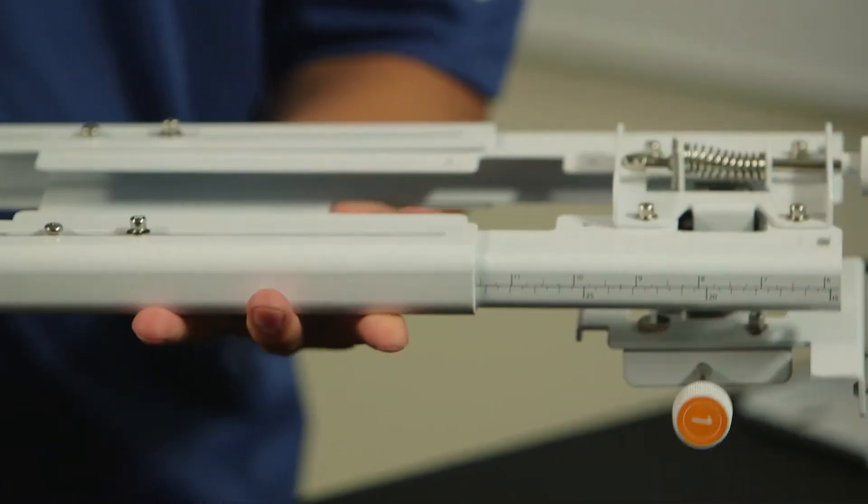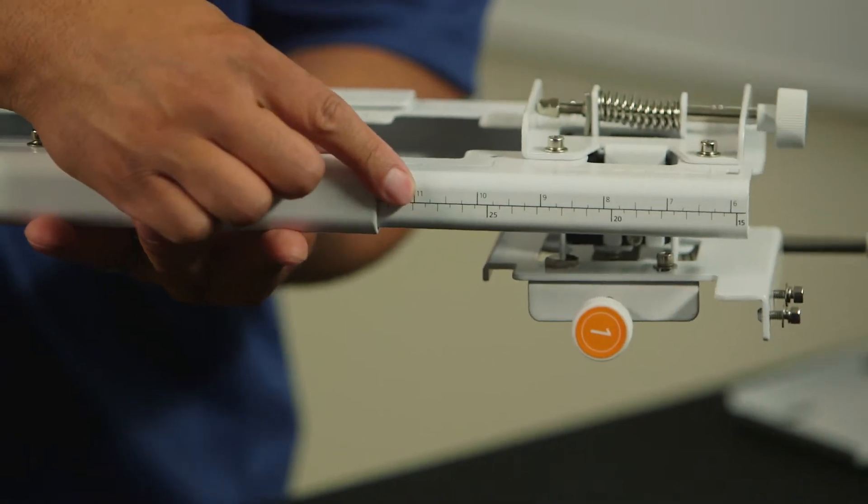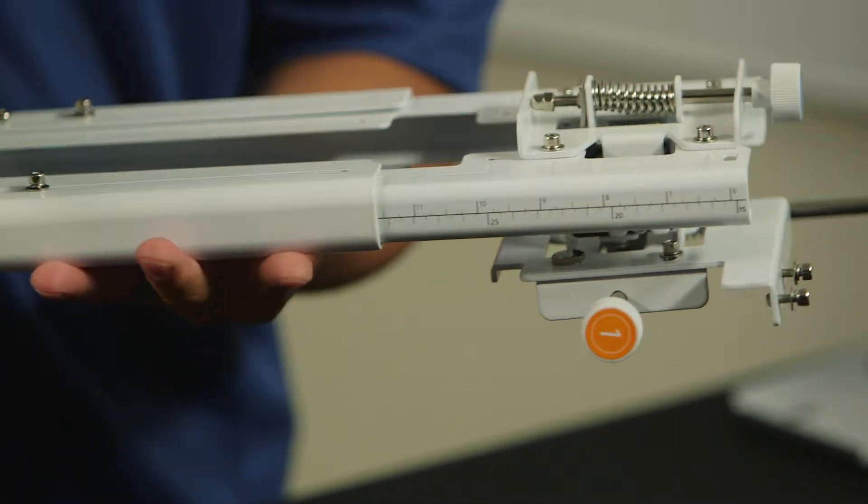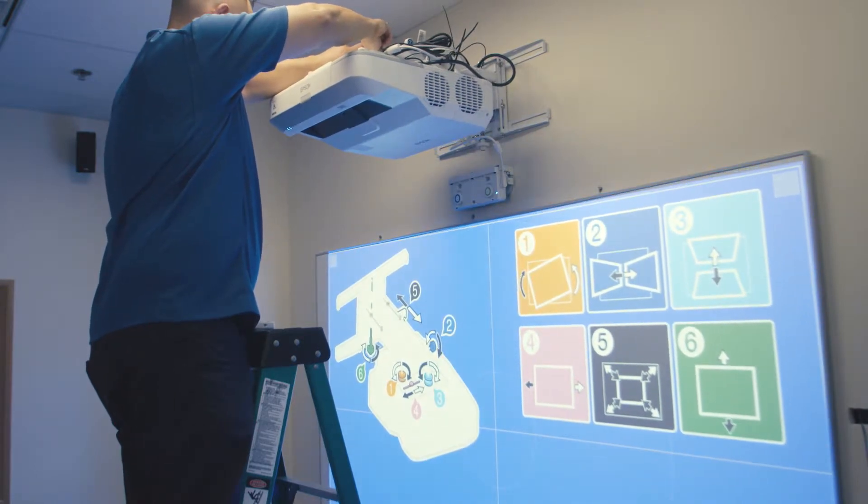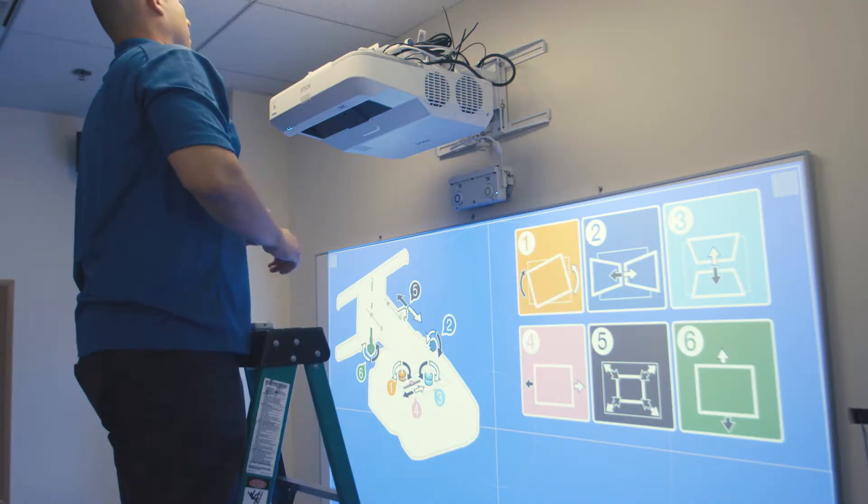On the mounting arm, there are markings for setting the length of the arm to achieve the desired image size. Extending the mount arm by sliding it out will allow for a larger image. Shortening the mount arm will reduce the image size.